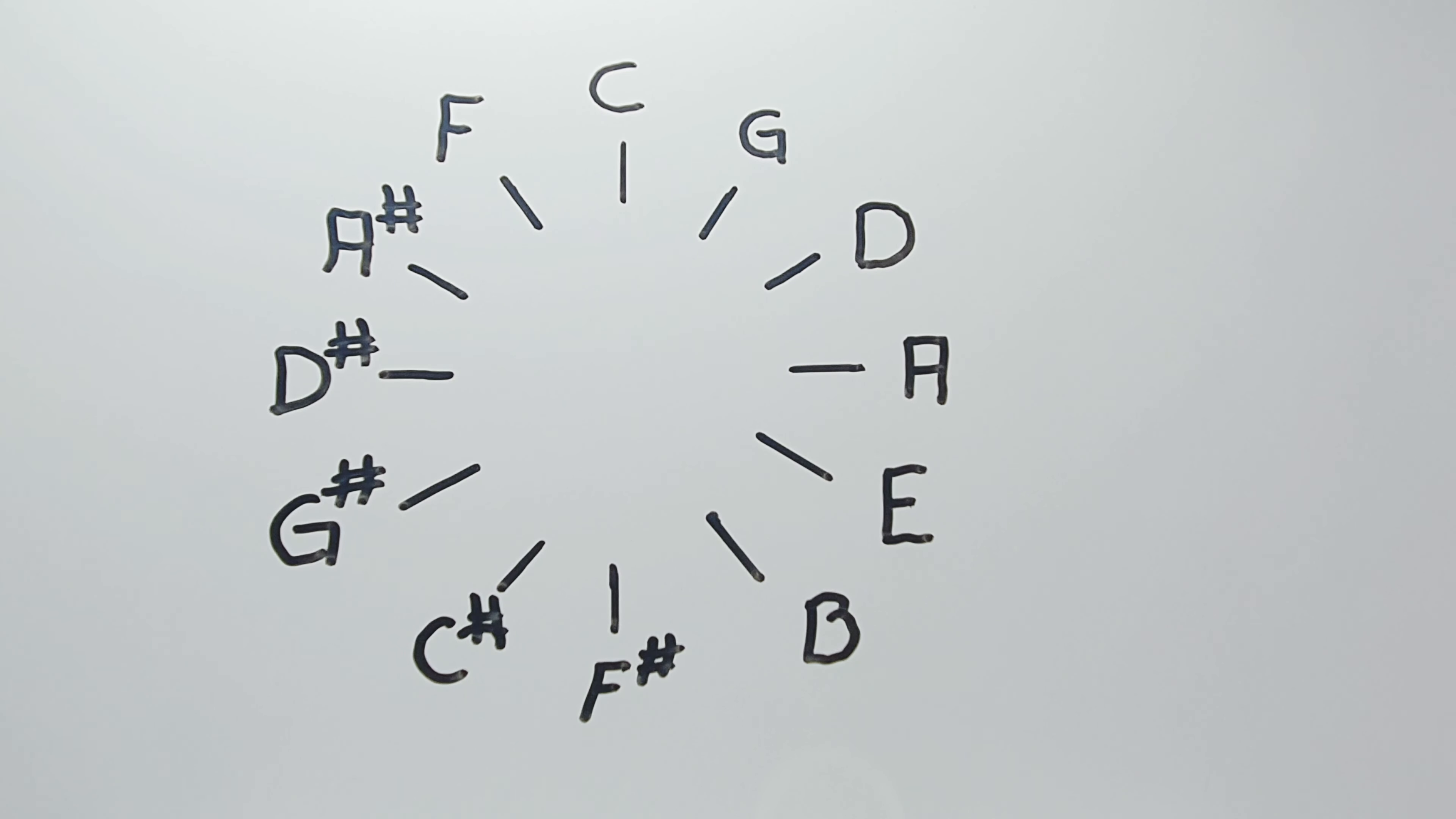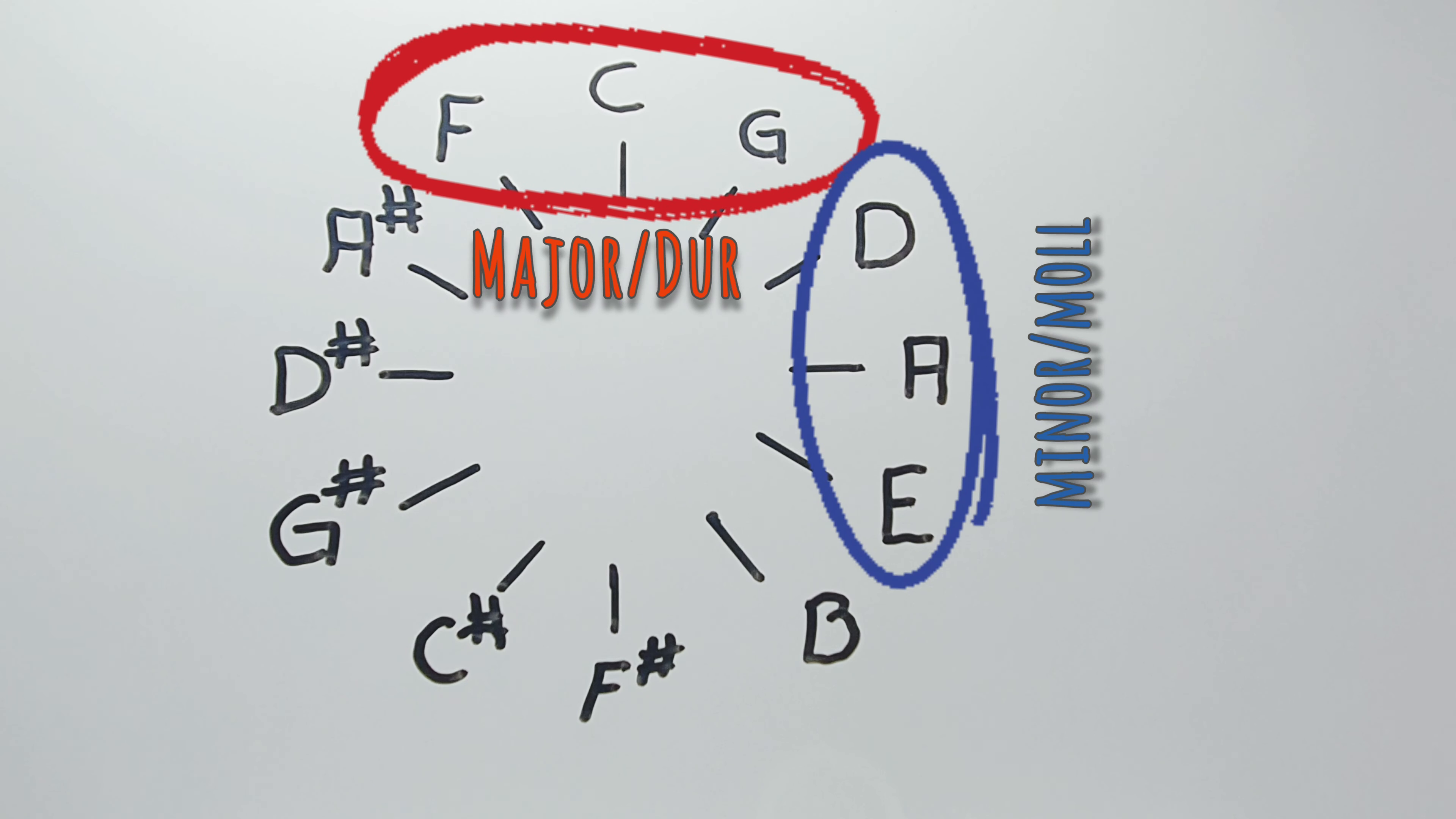Now I'm going to talk about the six friends. Three of them are always happy and only play major. The other three are always sad and only play minor. The happy major friends are always within their red circle, placed three hours before the sad ones. The sad minor friends are always within their blue circle. These always sound good.